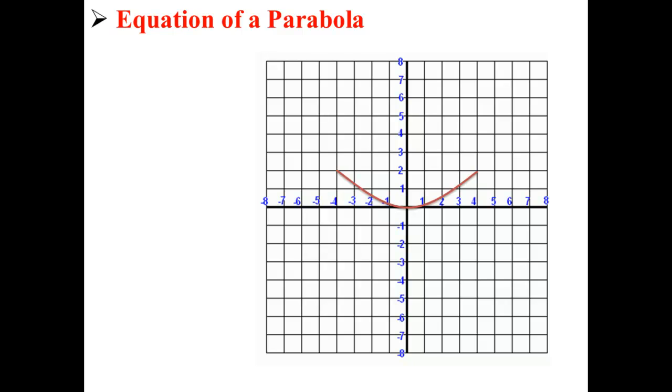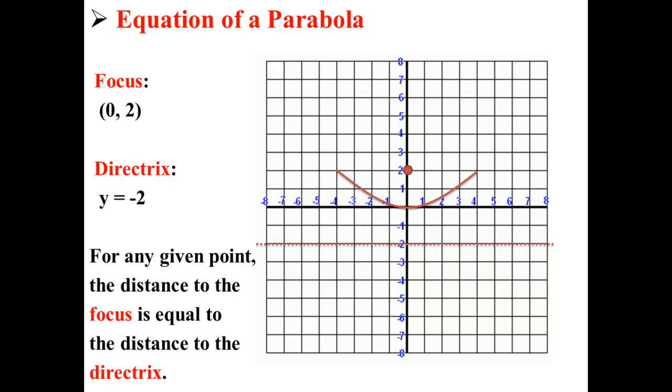Here we have the bottom part of a parabola that's a bit wider. This parabola has its focus at the point (0, 2) and its directrix at the line y = -2. For any given point, the distance to the focus is equal to the distance to the directrix.